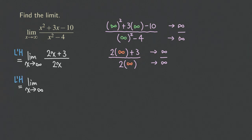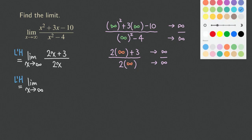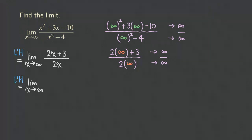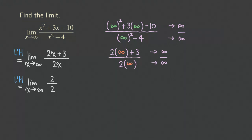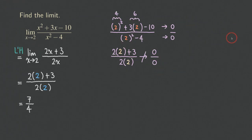So we can apply L'Hôpital's rule one more time — a second application. The derivative of the numerator 2x + 3 is just 2. The derivative of the denominator 2x is also 2. Now there is no more x in the function. We have the limit equal to 2 over 2, which equals 1. That's the answer for this problem.